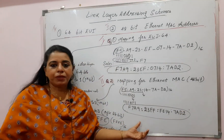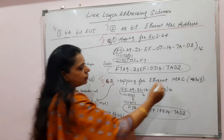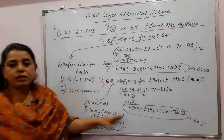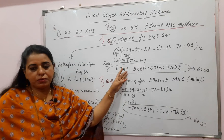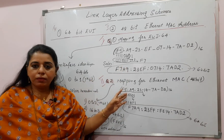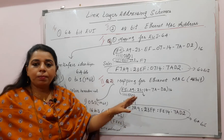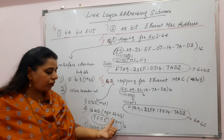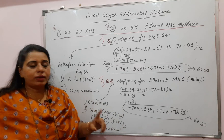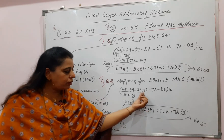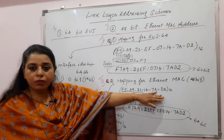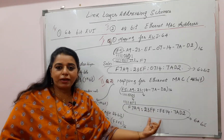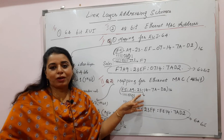You are arriving at the interface identifier which is 64 bits — both methods must give 64 bits. The procedure is simple: two link layer addressing schemes. In the first one, just replace bit 7 from 0 to 1 and write in colon hexadecimal. In the second method, replace the 7th bit from 0 to 1 and insert 16 bits with value FFFE — after 24 bits of the 48-bit MAC address, dividing it into two 24-bit parts and placing FFFE in between.